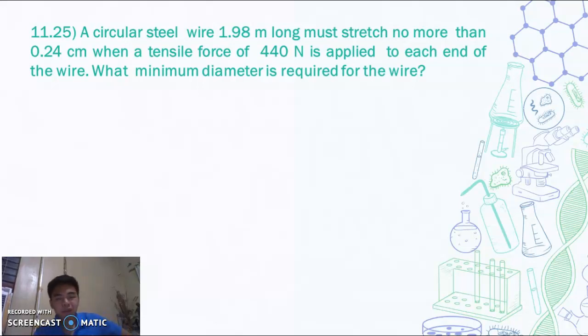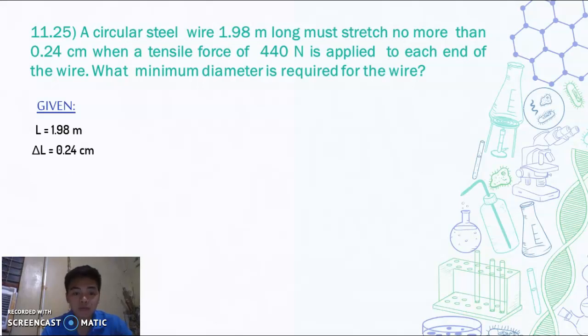For our first problem, problem 11.25. A circular steel wire 1.98 meters long must stretch no more than 0.24 cm when a tensile force of 440 N is applied to each end of the wire. What minimum diameter is required for the wire? So we have a given.